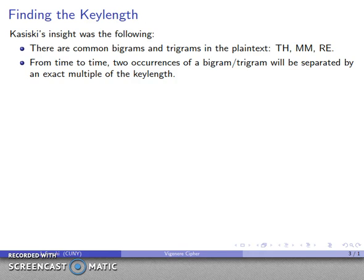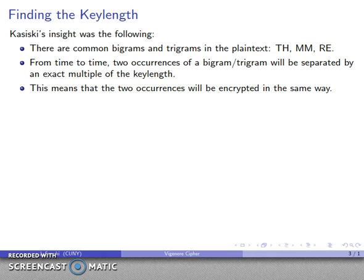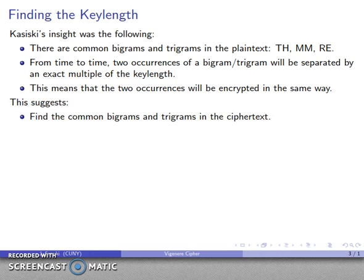From time to time, two occurrences of a given bigram or trigram will be separated by an exact multiple of the key length. These might be separated by an exact multiple of whatever the key length is. What that means is that the two occurrences of the bigram will be encrypted in the same way, and I'll have common bigrams and trigrams in the ciphertext.